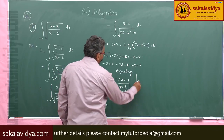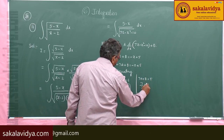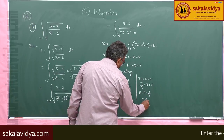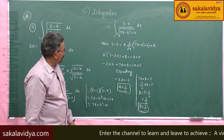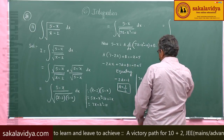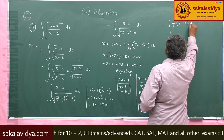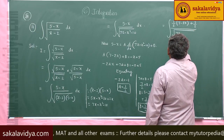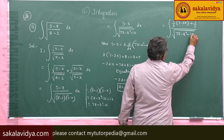Now, 7a plus b equals 5. Since a is 1 by 2, we get 7 by 2 plus b equals 5, so b equals 5 minus 7 by 2, which is 3 by 2. Therefore, (5 minus x) can be written as (1 by 2) times (7 minus 2x) plus (3 by 2), and the integral becomes (1 by 2)(7 minus 2x) plus (3 by 2) over root of (7x minus x squared minus 10) dx.